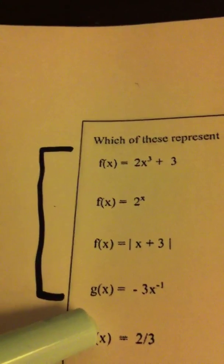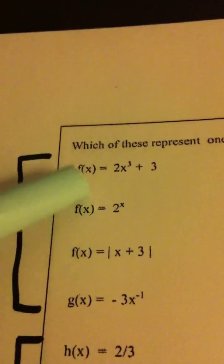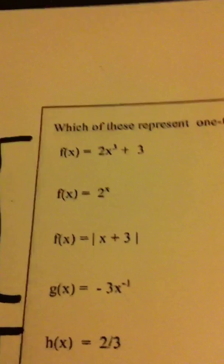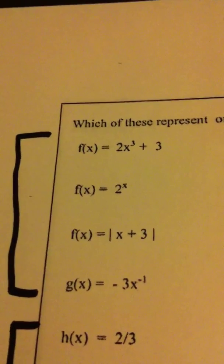First of all, the reason we know each one of these is a function, we don't even have to use the vertical line test, is because they wrote it in functional notation. If you write f(x) equals, f(x) equals, f(x) equals, g(x) equals, you automatically know it's a function.